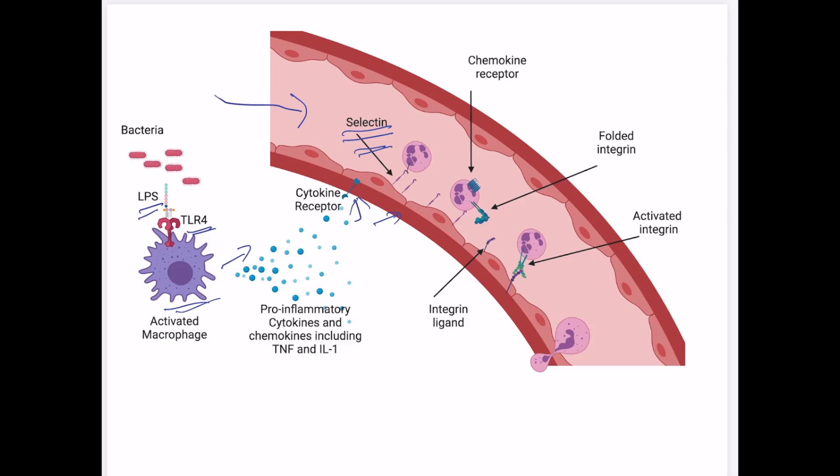Now, after the cells rolled, they now encounter another molecule. And the other molecule that they encounter, here we call it an integrin ligand. An integrin ligand in this case, the classical example would be ICAM1. So now what happened was that the neutrophils first rolled by binding to selectins. Then they got activated by a chemokine. We had a chemokine receptor on the neutrophils, which got activated by a chemokine like CXCL8.